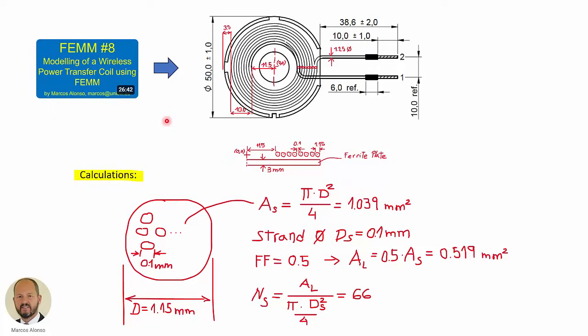So here we have again the drawing of the WPT coil as we have used in previous video. This is the drawing in FEMM. We have a total of eight turns. And now we are going to select the diameter for the different strands of the Litz wire that we are going to use. And also to calculate the number of strands that we are going to have. So the total diameter that we have for each turn is 1.15 millimeters. And we are going to use a 0.1 millimeter diameter for the Litz wire strands.